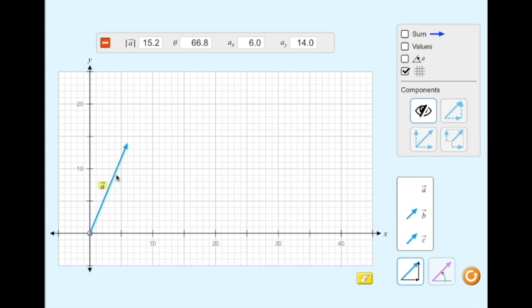Add the B vector to the graph in the same way you added the A vector. Since the B vector is now highlighted, the top menu displays information about the B vector.